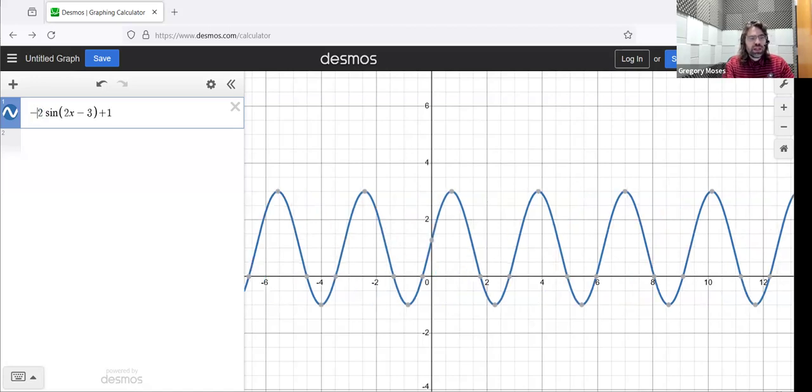If I made that negative, and now we're going from negative one to positive three, the distance is still four. Half of four is two, so the amplitude is still two.